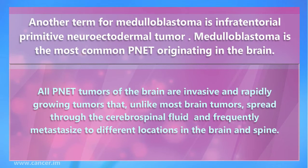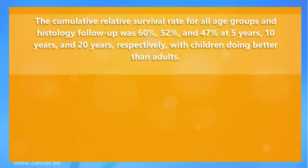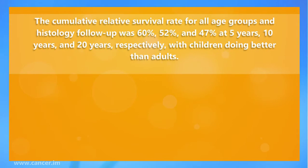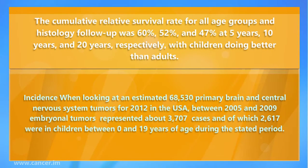All CNS tumors of the brain are invasive and rapidly growing tumors that, unlike most brain tumors, spread through the cerebrospinal fluid and frequently metastasize to different locations in the brain and spine. The cumulative relative survival rate for all age groups was 60 percent, 52 percent, and 47 percent at five years, ten years, and 20 years respectively, with children doing better than adults.